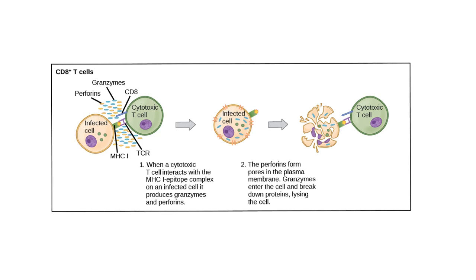MHC 1s are present on all cells with a nucleus. They can show either self-proteins, or if it's an infected cell, viral proteins. In the case that it shows a viral protein from an infected cell, it will allow a cytotoxic T cell to recognize it. So the specific cells that recognize MHC 1 are cytotoxic T cells, or CD8 positive cells. When a cytotoxic T cell recognizes that the MHC 1 complex, along with the peptide inside it, does not belong to the body, it will become activated — meaning the cell is infected.